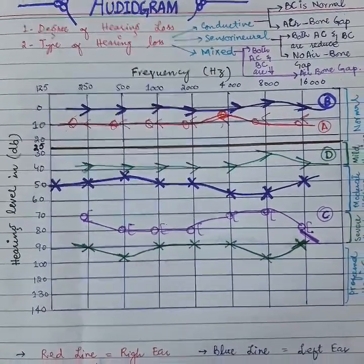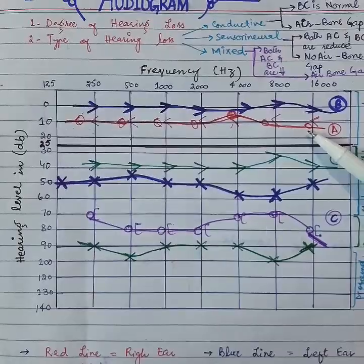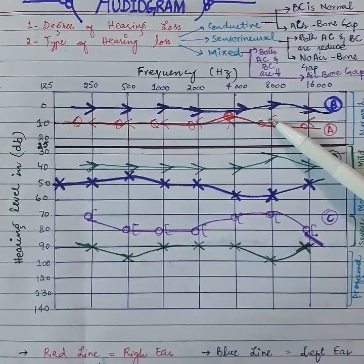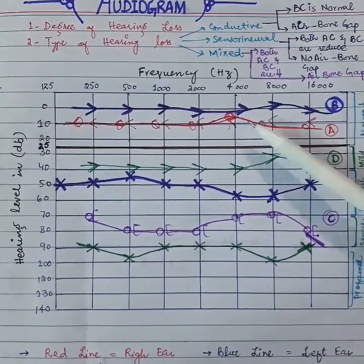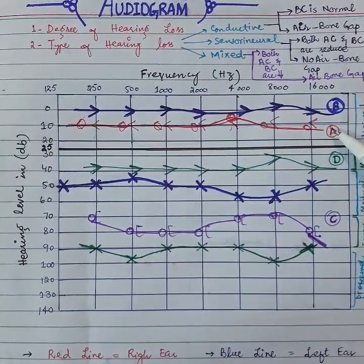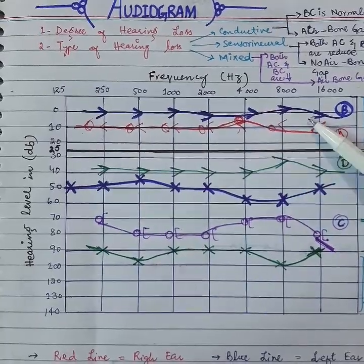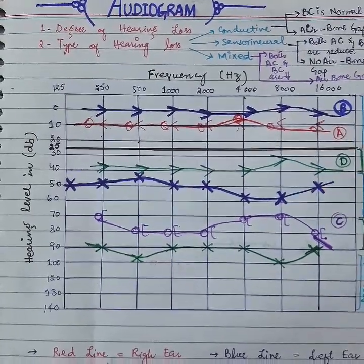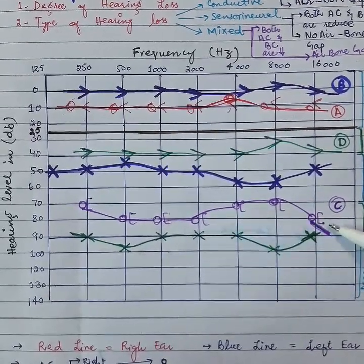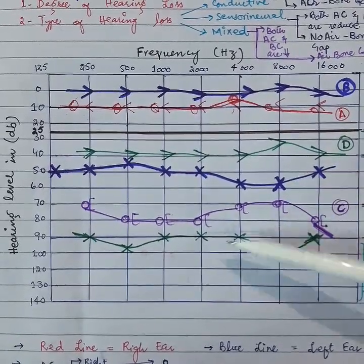Now we will look at another aspect of these audiograms. Graph A shows normal hearing of the right ear, as bone conduction brackets face towards the right side and air conduction is shown by circles. Graph B shows conductive hearing loss of the left ear. Graph C shows sensorineural hearing loss of the right ear. And graph D shows mixed hearing loss of the left ear.